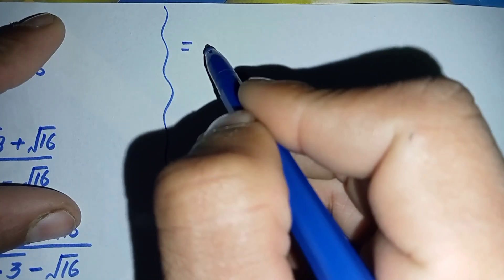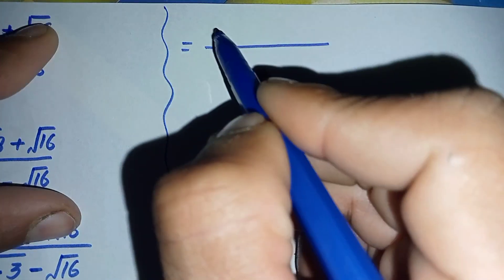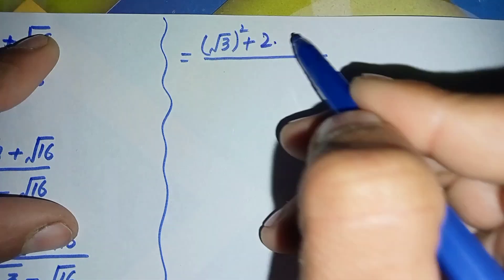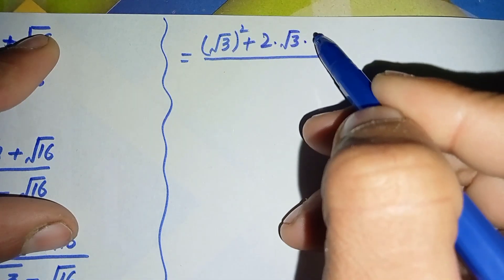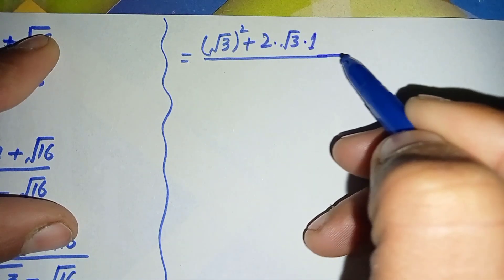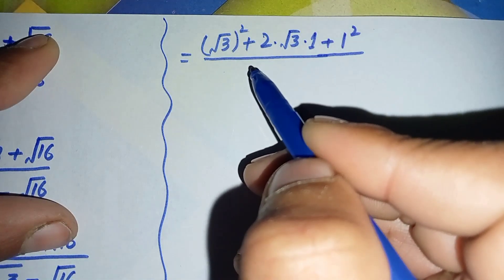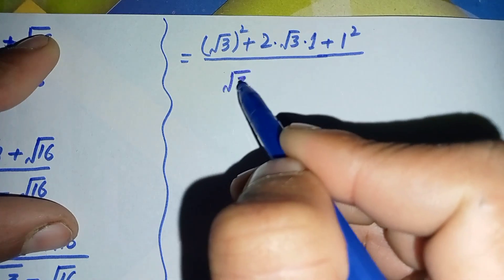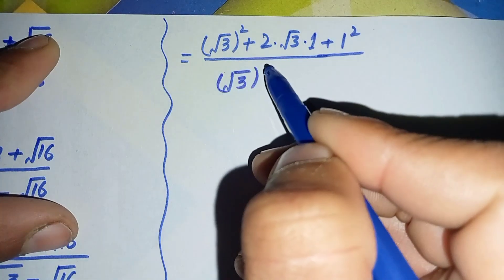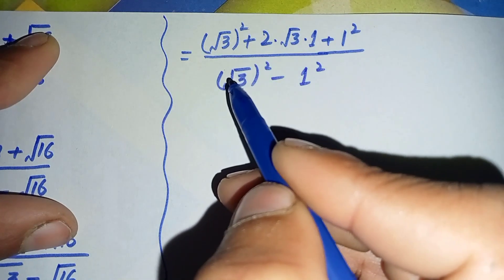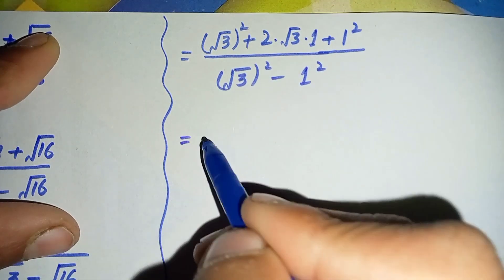So the equation will become: in the numerator, a is square root of 3 and b is 1, giving square root of 3 whole square, plus 2 times square root of 3 times 1, plus 1 squared. In the denominator it will become square root of 3 whole square minus 1 squared.